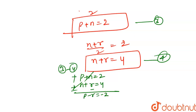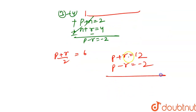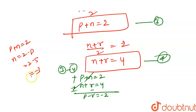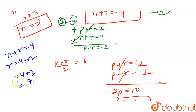Using the second relation for the y-axis: (p + r) / 2 = 6, so p + r = 12. We have p - r = -2 and p + r = 12. Adding them: 2p = 10, so p = 5. Since p + n = 2 and p = 5, n = -3. Then from n + r = 4: r = 4 - (-3) = 7.